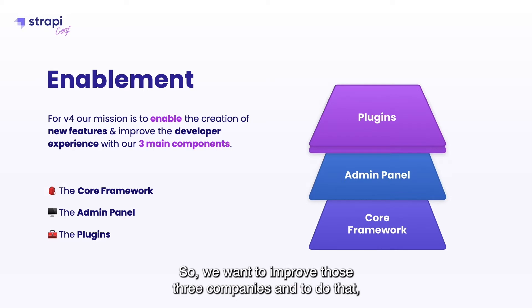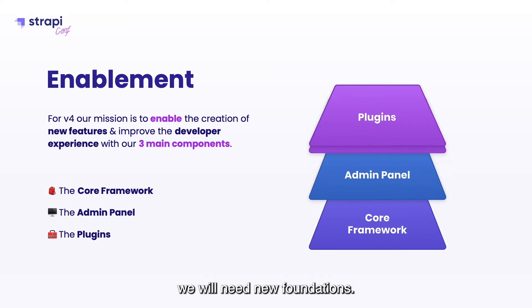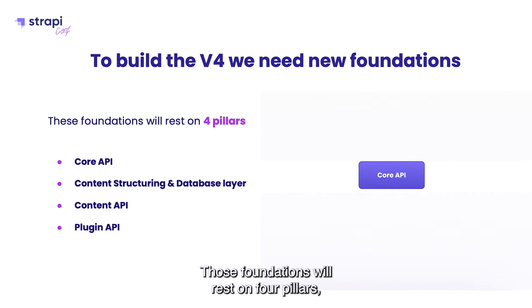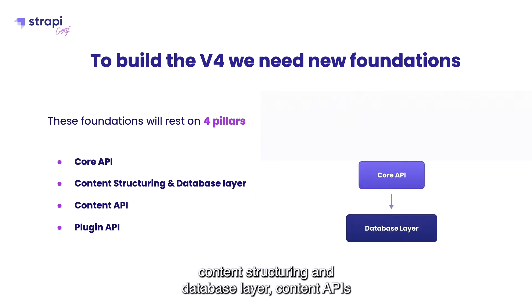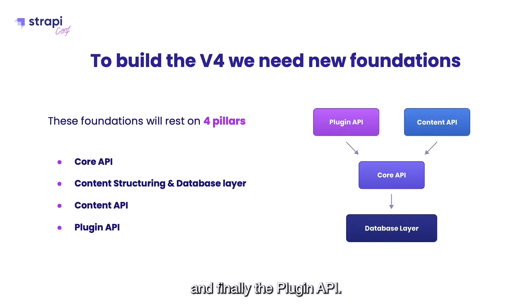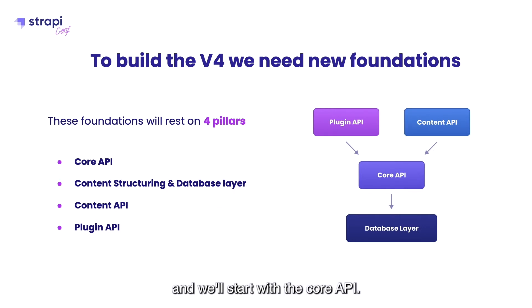We want to improve those three components, and to do that we will need new foundations. Those foundations will rest on four pillars: the core API, the content structuring and database layer, the content API, and finally the plugin API. We'll have a look at those four pillars right now and we'll start with the core API.